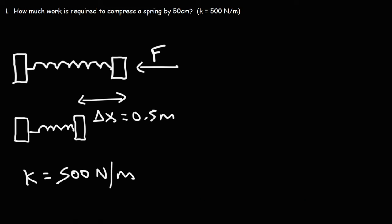The spring constant tells you how stiff or how difficult it is to compress the spring. So what this value tells us is that in order to compress the spring by 1 meter, we're going to require 500 newtons of force to compress it by just 1 meter. But how do we use this information to calculate the work done?